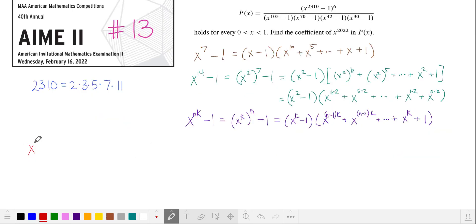Let's take a look at one of the factors in our numerator: x to the power of 2310 minus 1. Looking at the denominator, we have x to the power of 105, which we can get by combining some of these factors in the prime factorization of 2310.